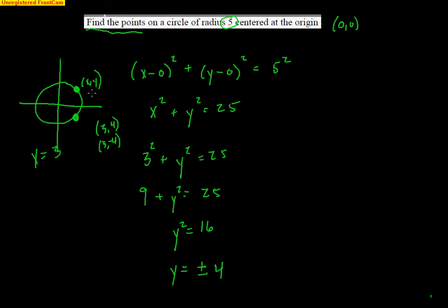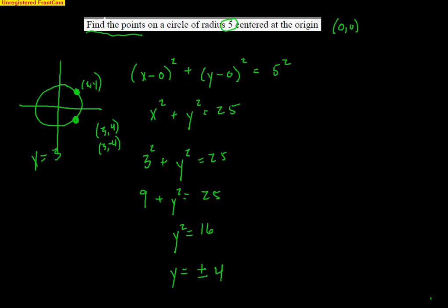Just be aware that a circle is not a function because it does not pass the vertical line test. A function requires every x to have only one y. Here, x equals 3 has two y values: positive 4 and negative 4. That's completely okay though, because no one ever said this is a function — we're talking about circles.